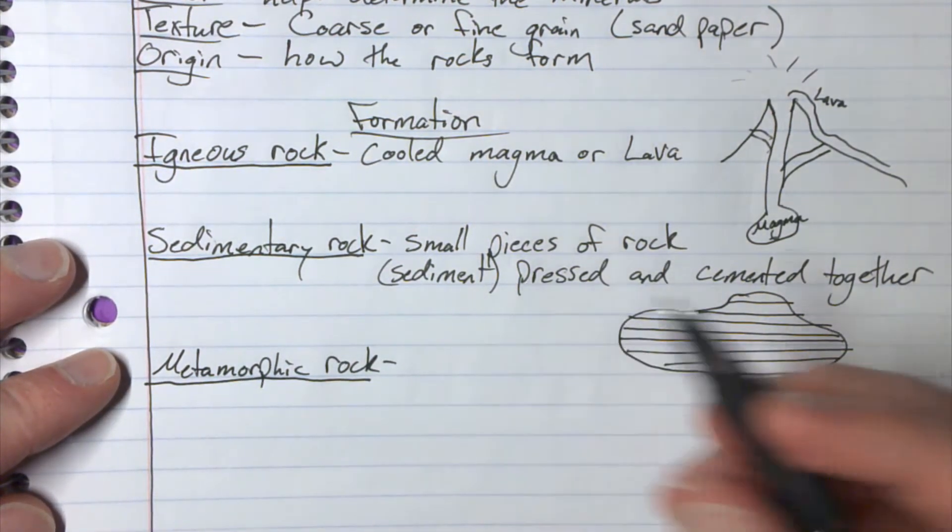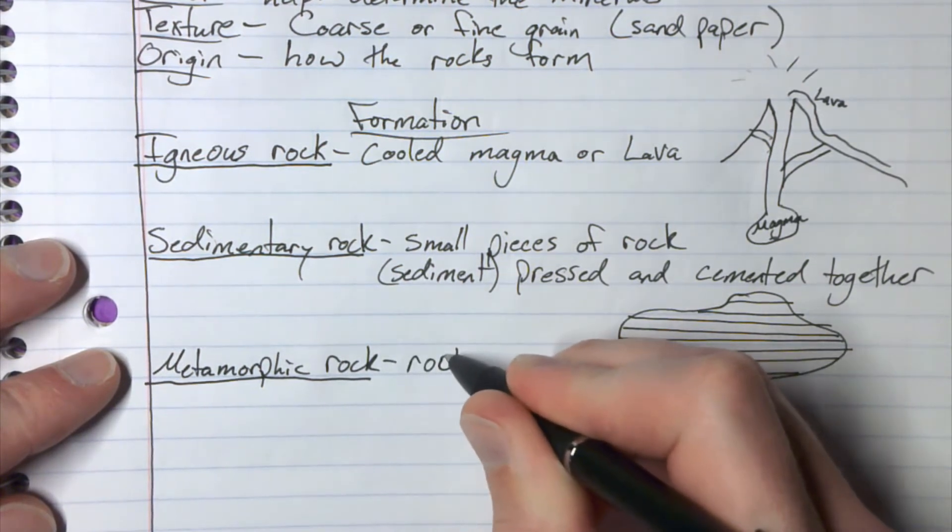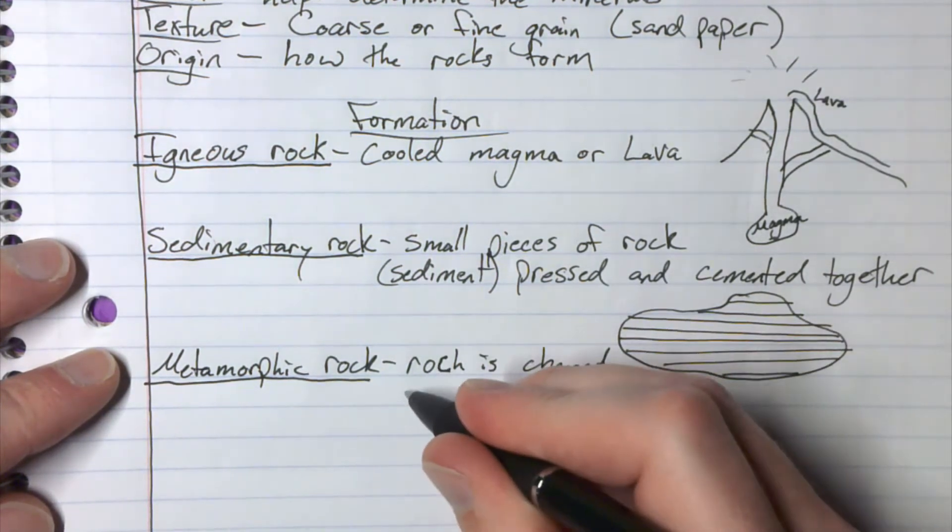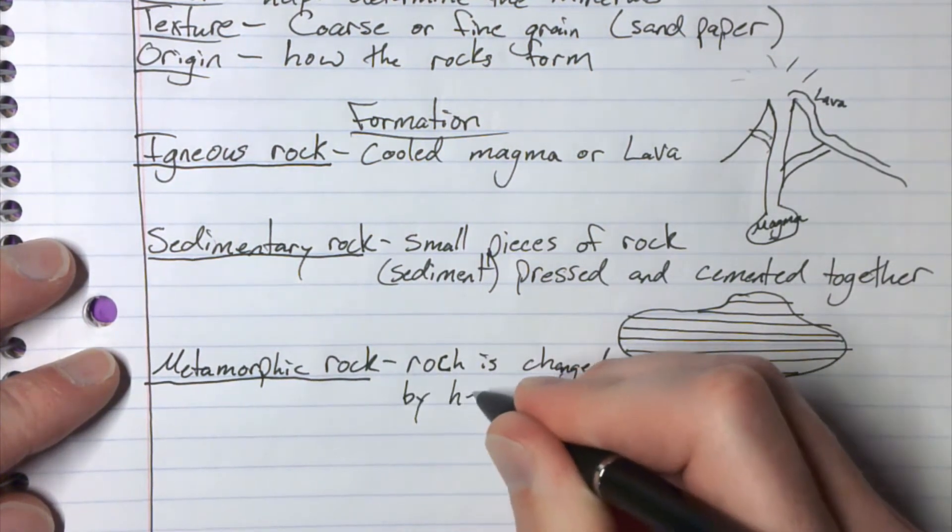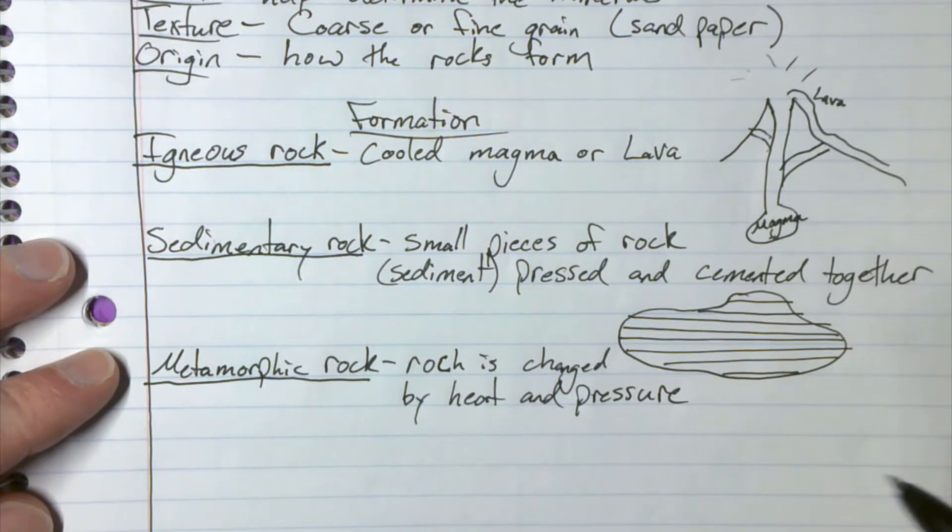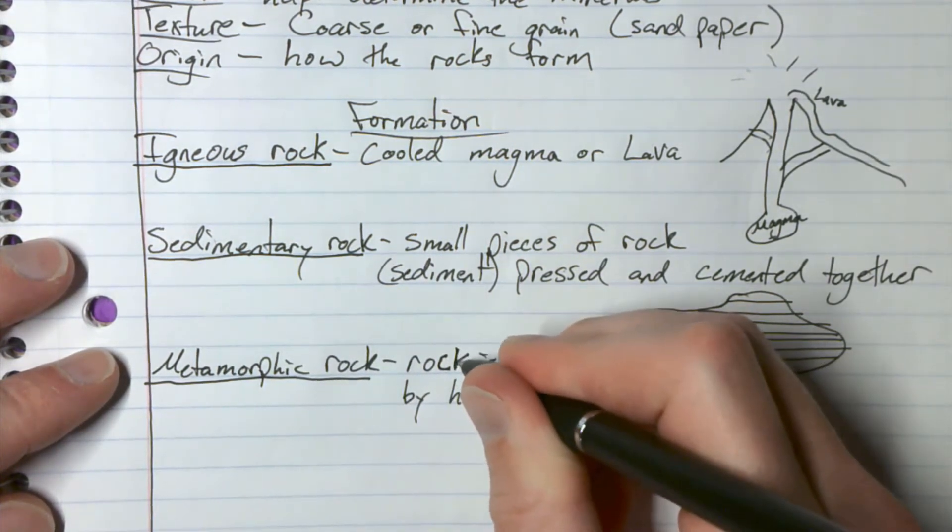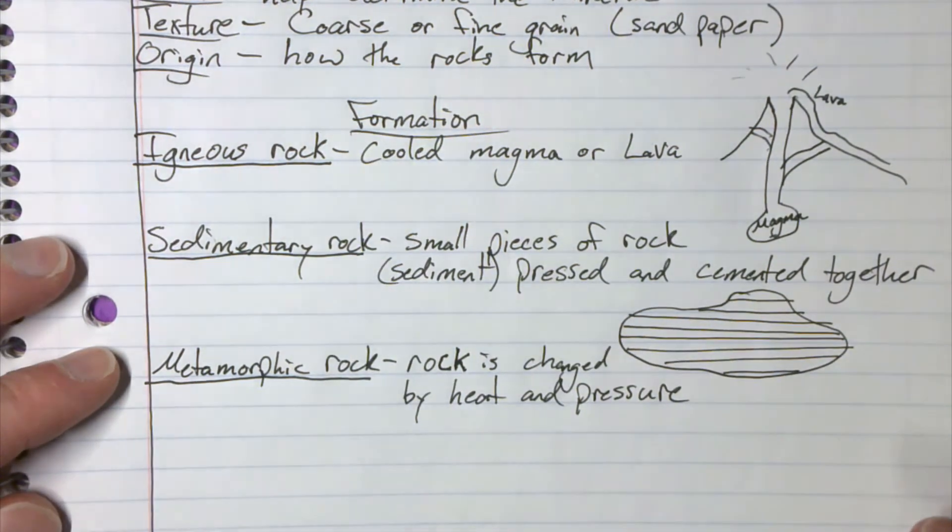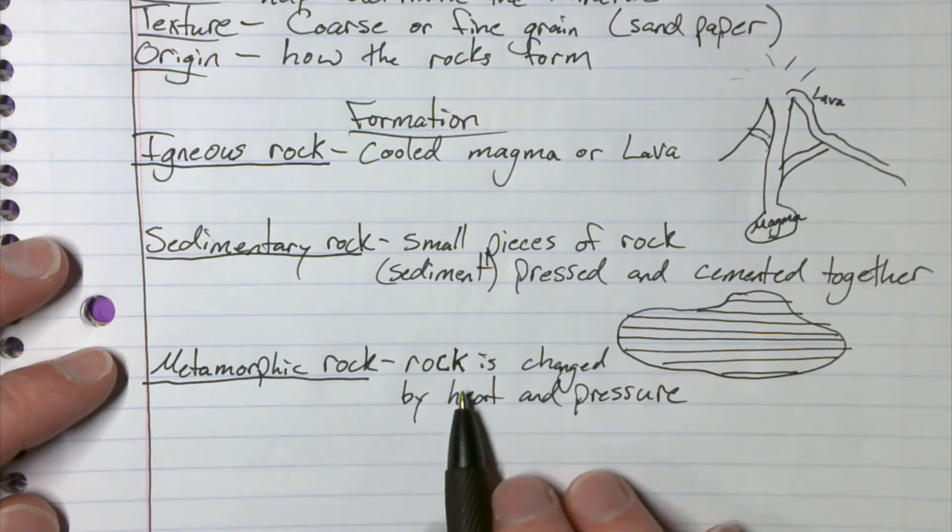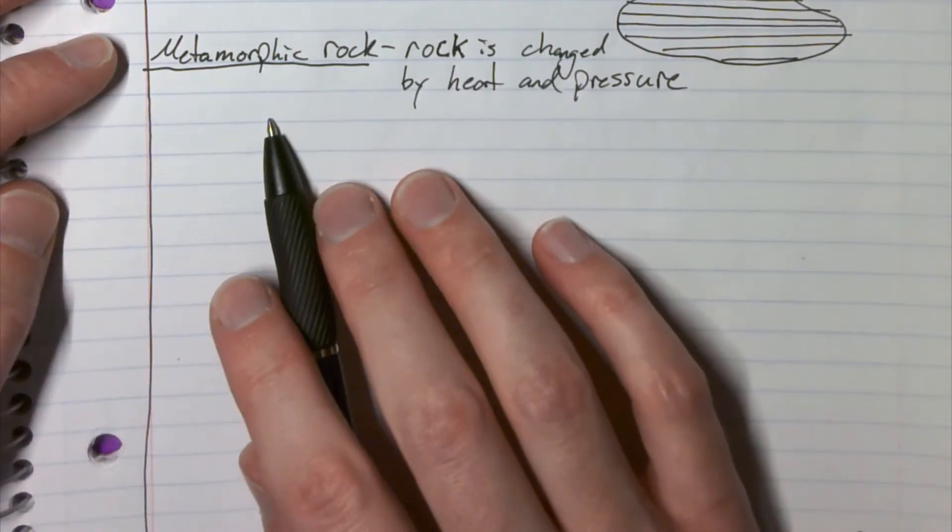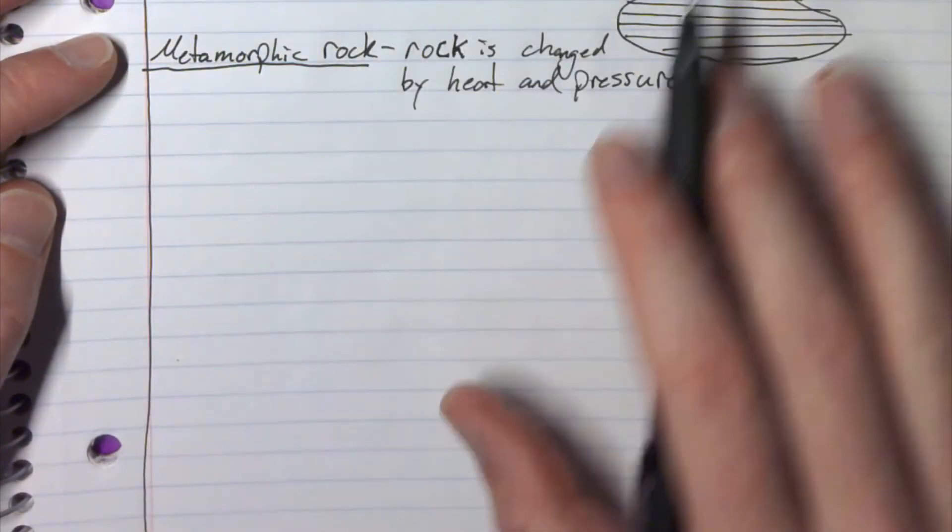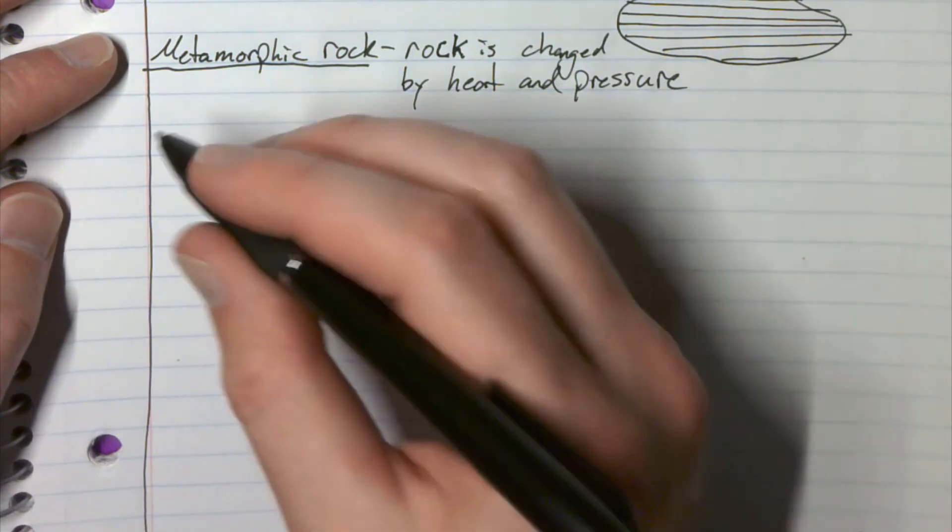And this one happens underground. So metamorphic rock, so this is rock is changed by heat and pressure. So this is going to happen underground under the crust or even in the mantle with all that heat and pressure. It's going to change the kind of rock it is, and sometimes even chemically, which is pretty neat. And with these three together, they actually work together in something called a rock cycle.